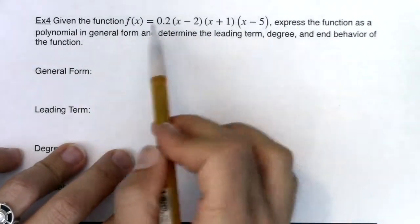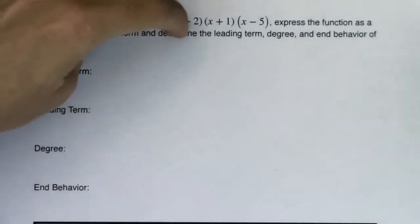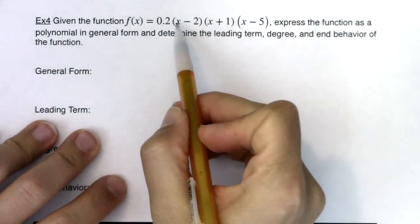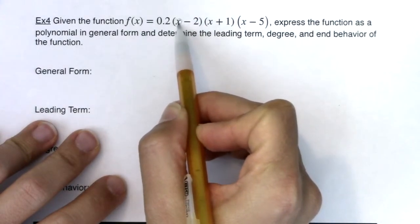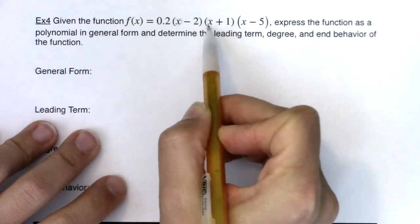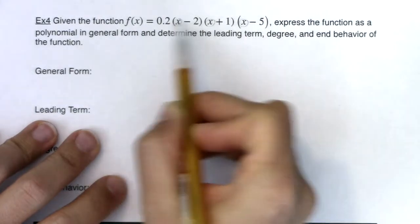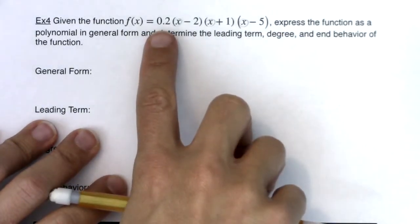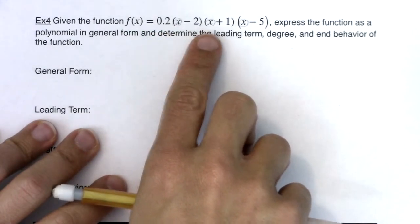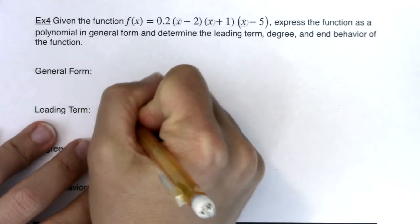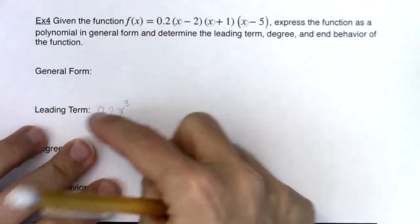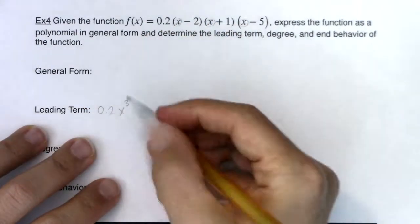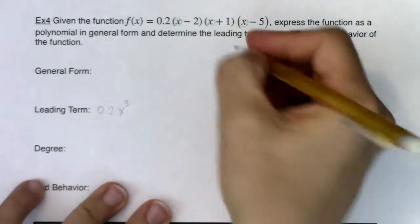I gave you this function in factored form, whereas in Example 3 everything was multiplied out and you could see the four terms of your polynomial. Given f(x) = 0.2 times (x minus 2) times (x plus 1) times (x minus 5), if you take the lead term in each factor — x, x, and x — you get 0.2 times x times x times x. So I believe the lead term will be 0.2x cubed. You can actually guess your leading term just by looking at the lead terms of each factor, multiplying those together, and then multiplying by that coefficient.